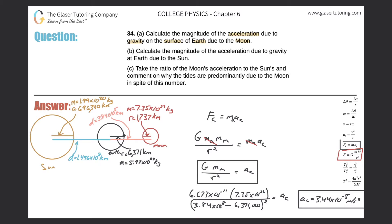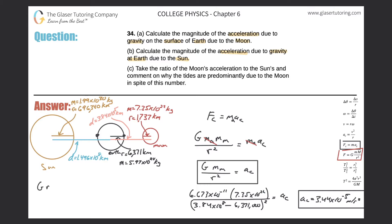So calculate the magnitude of the acceleration due to gravity at Earth due to the Sun. It doesn't say specifically at the surface of the Earth, but I'm going to assume I'm looking at the surface here. So I'm going to calculate the acceleration due to gravity of the Sun on this object on Earth. We're going to use the same basic formula: a_c equals G times M_Sun divided by r squared. Instead of the mass of the Moon, it's going to be the mass of the Sun.